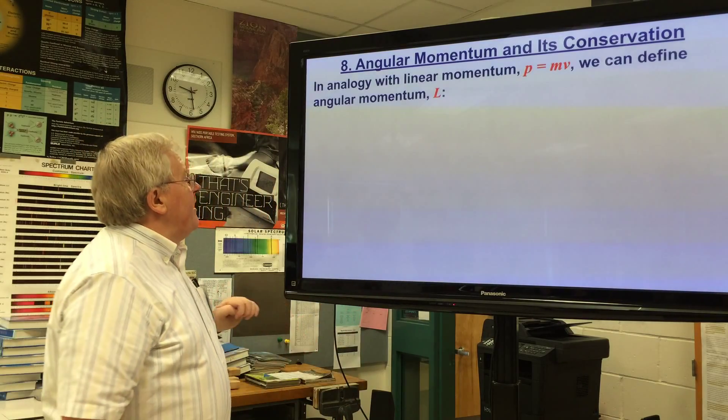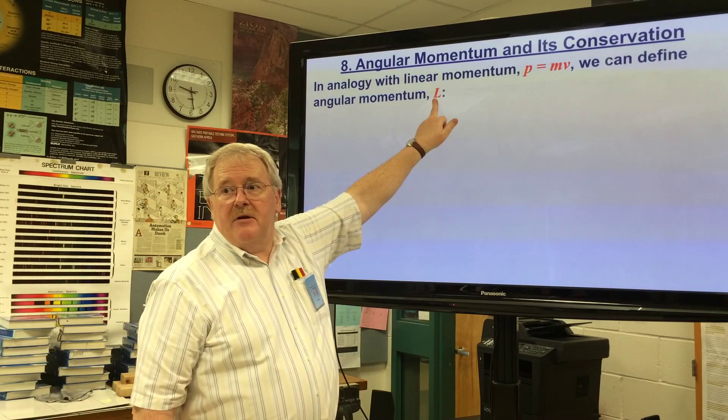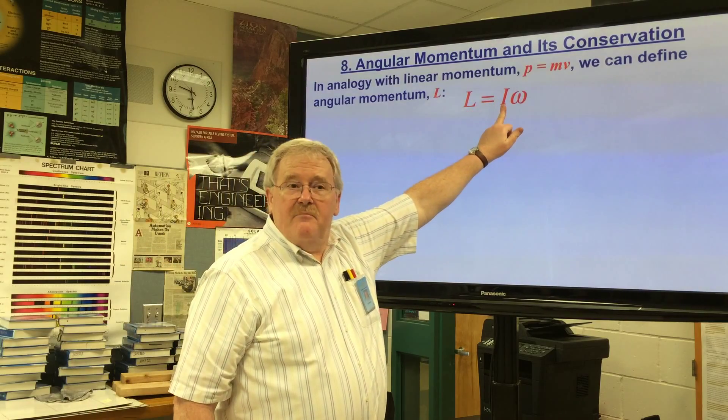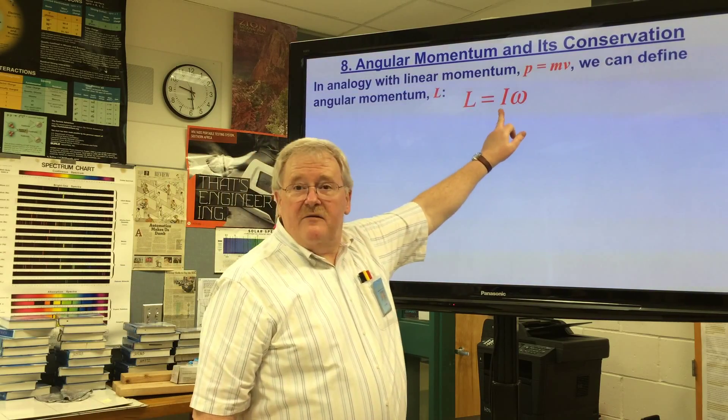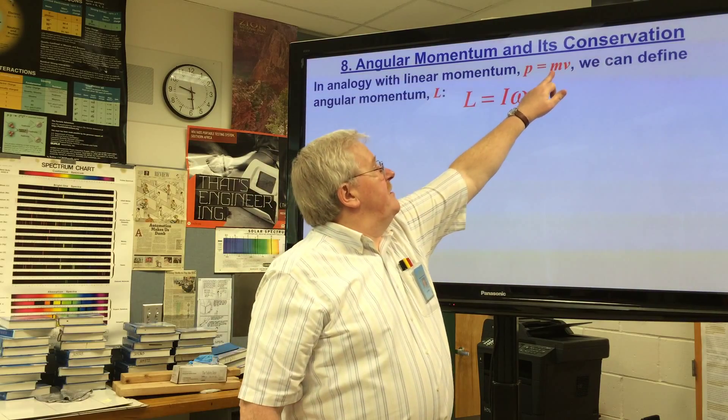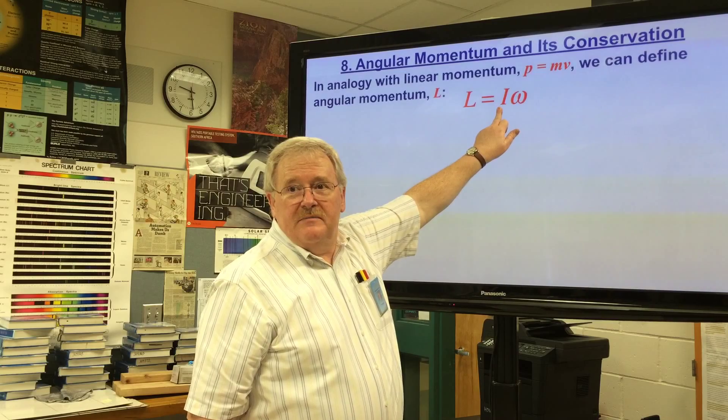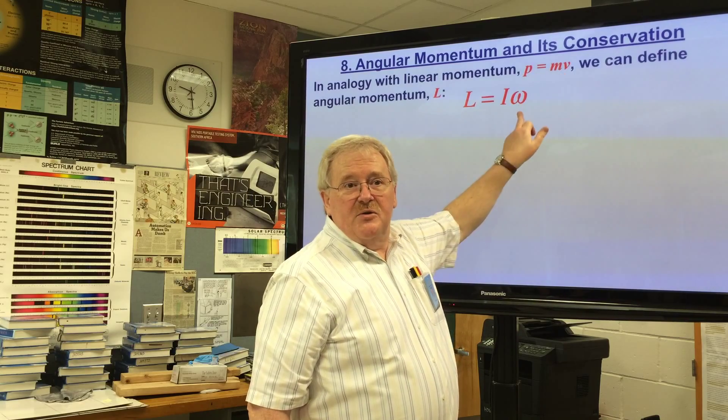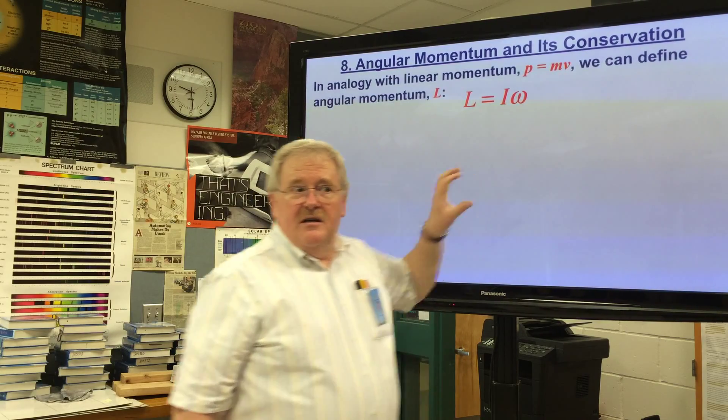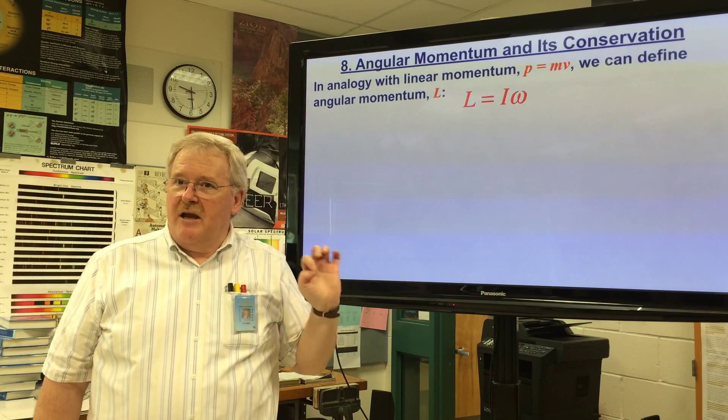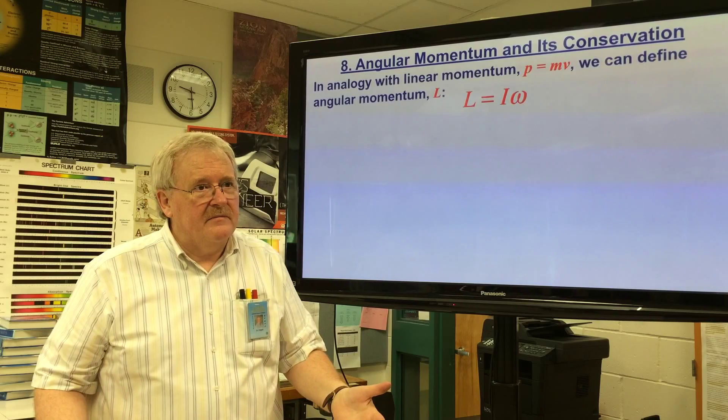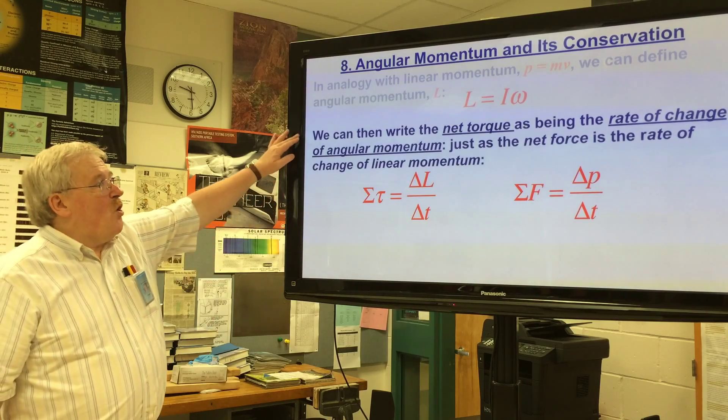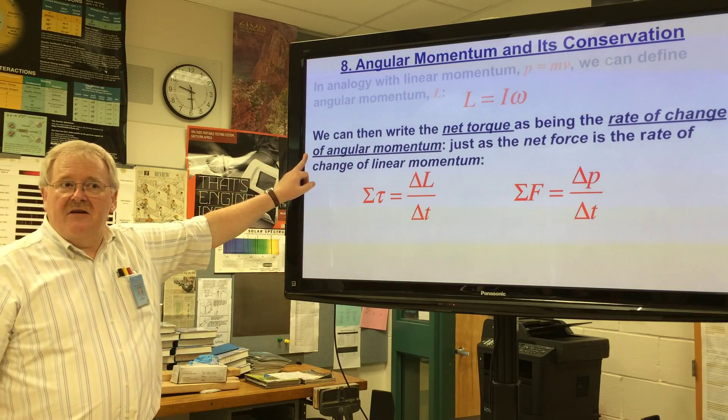In analogy with linear momentum where we give the letter p for the linear momentum, which is the mass times the velocity, we have a similar thing for angular momentum which we give the letter L, capital L. It's the moment of inertia, which is the equivalent of mass in rotational systems, times the angular velocity ω, compared to the linear velocity. So again you can see this nice symmetry coming up again in terms of how we look at things.